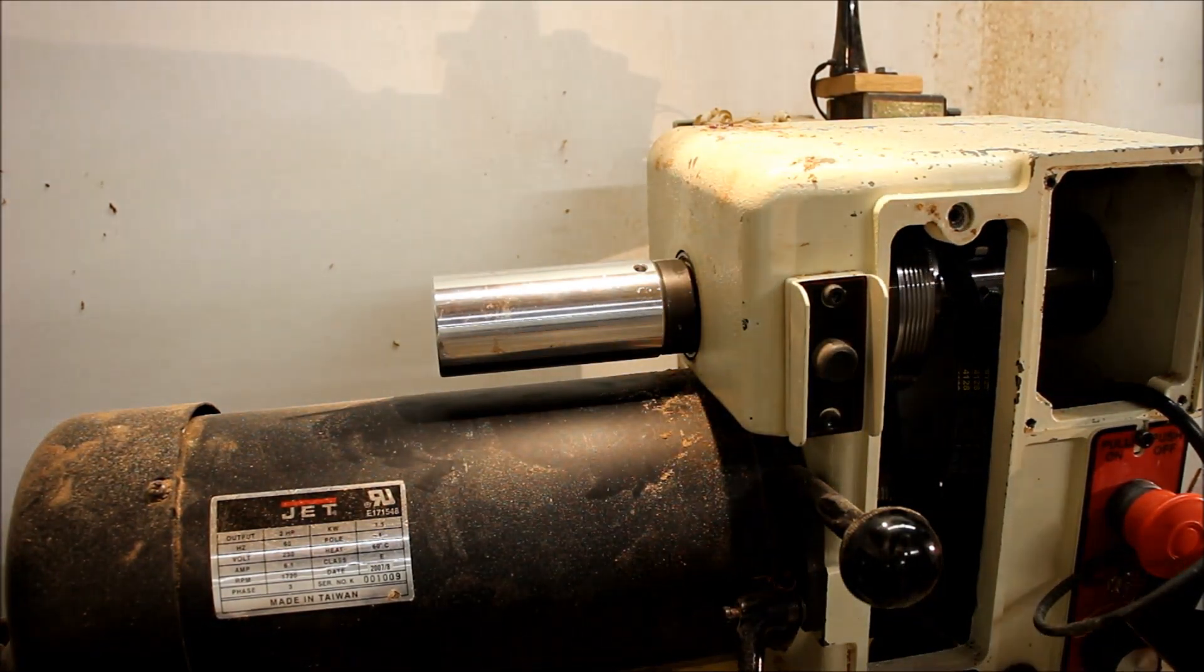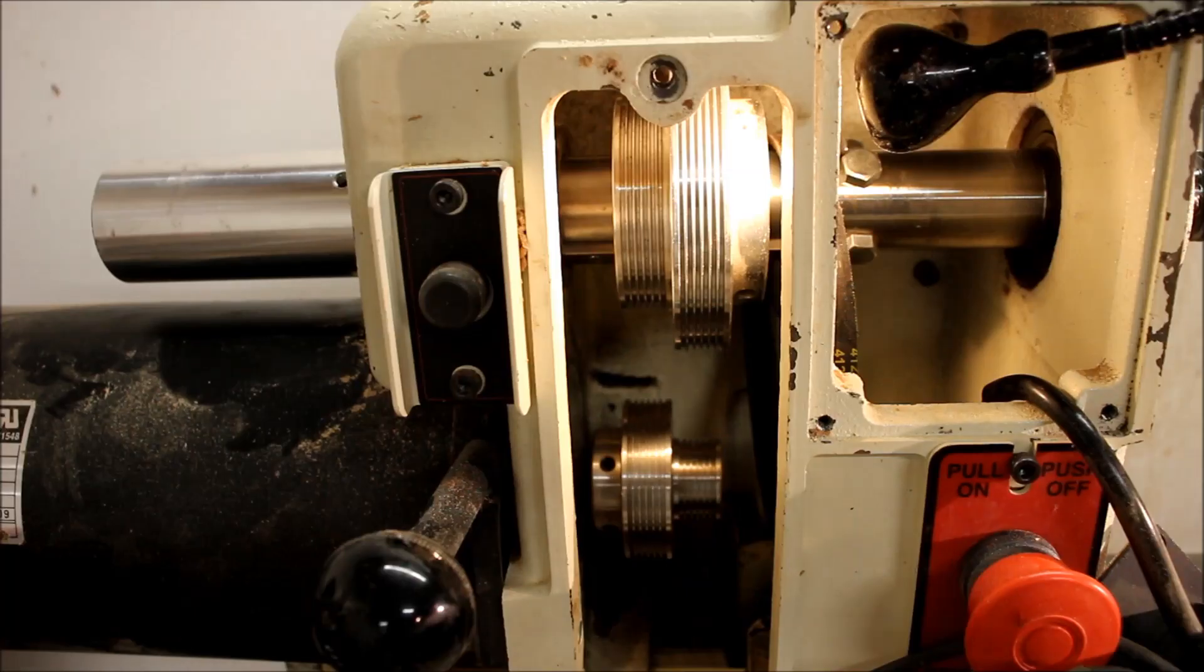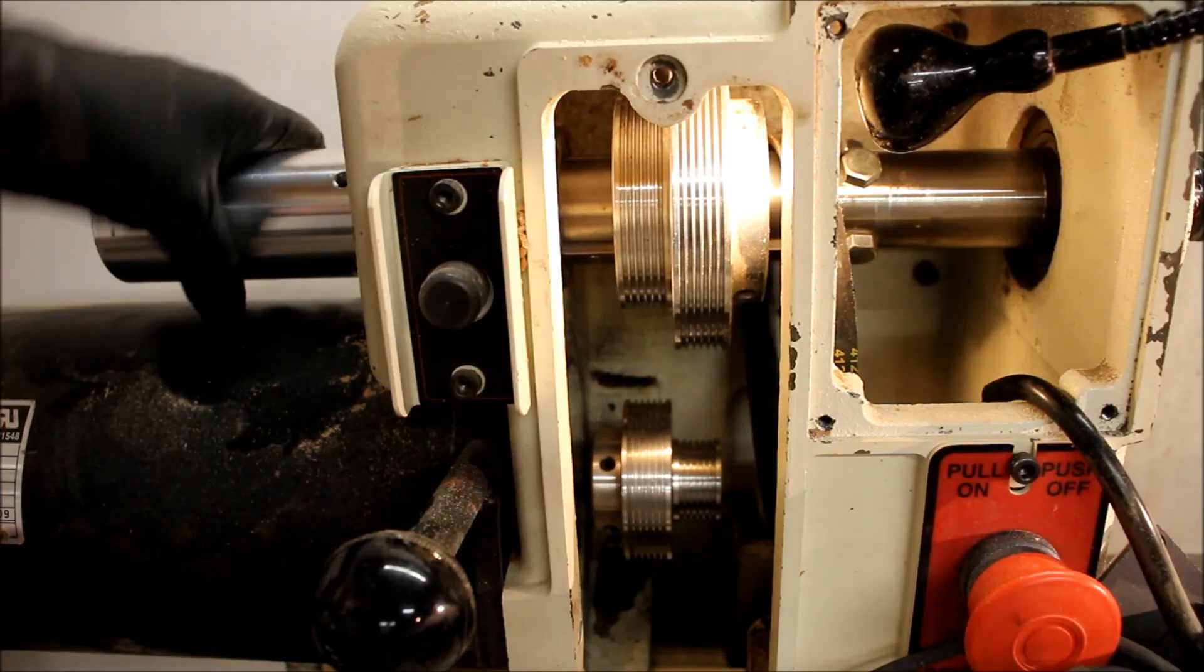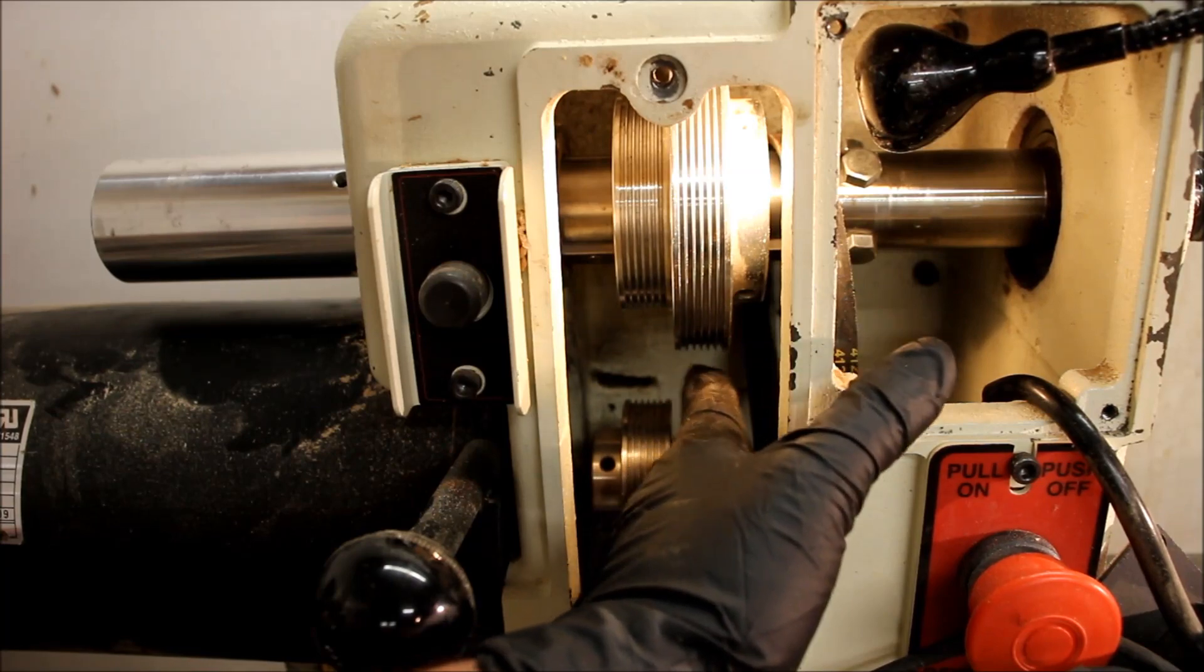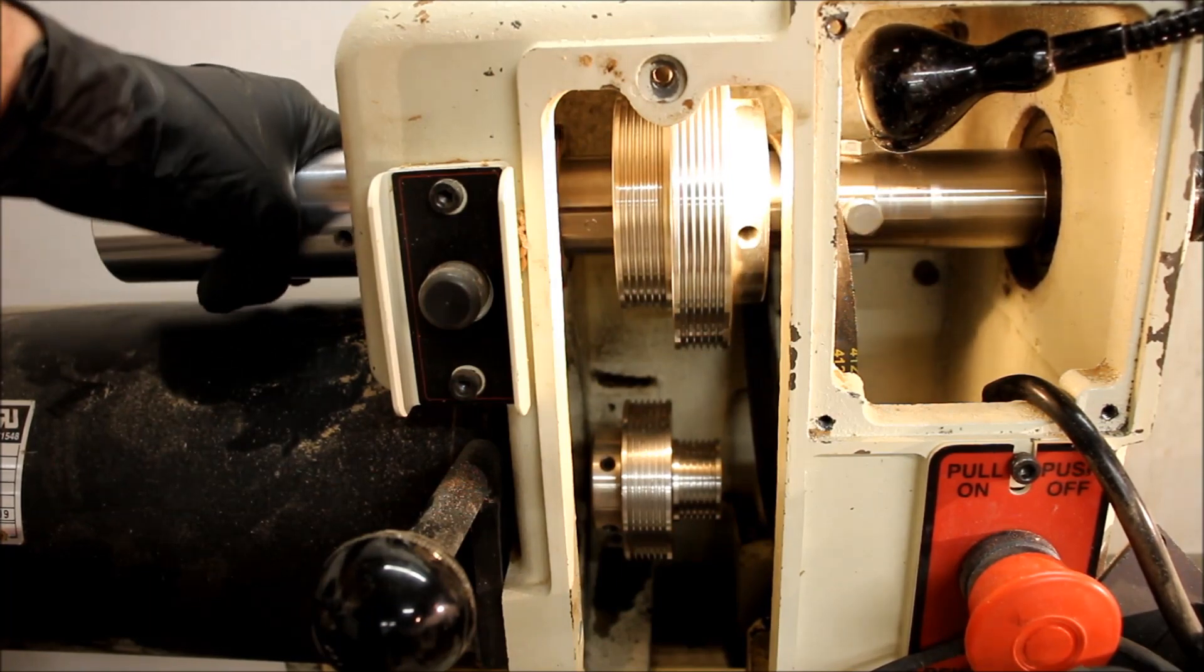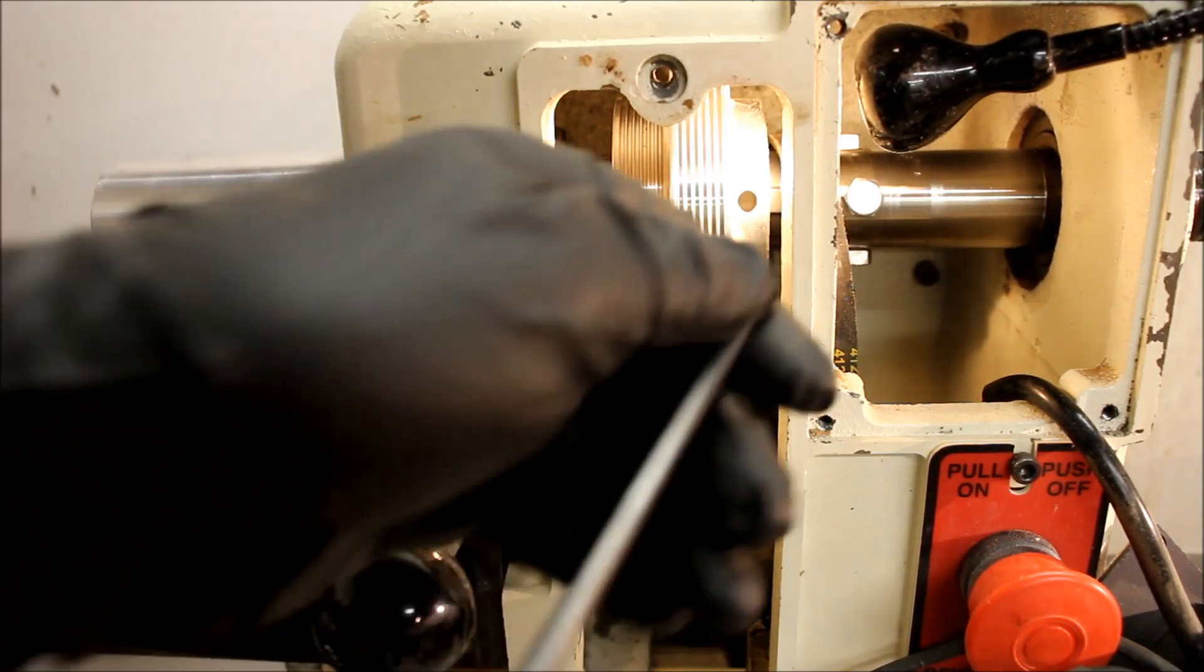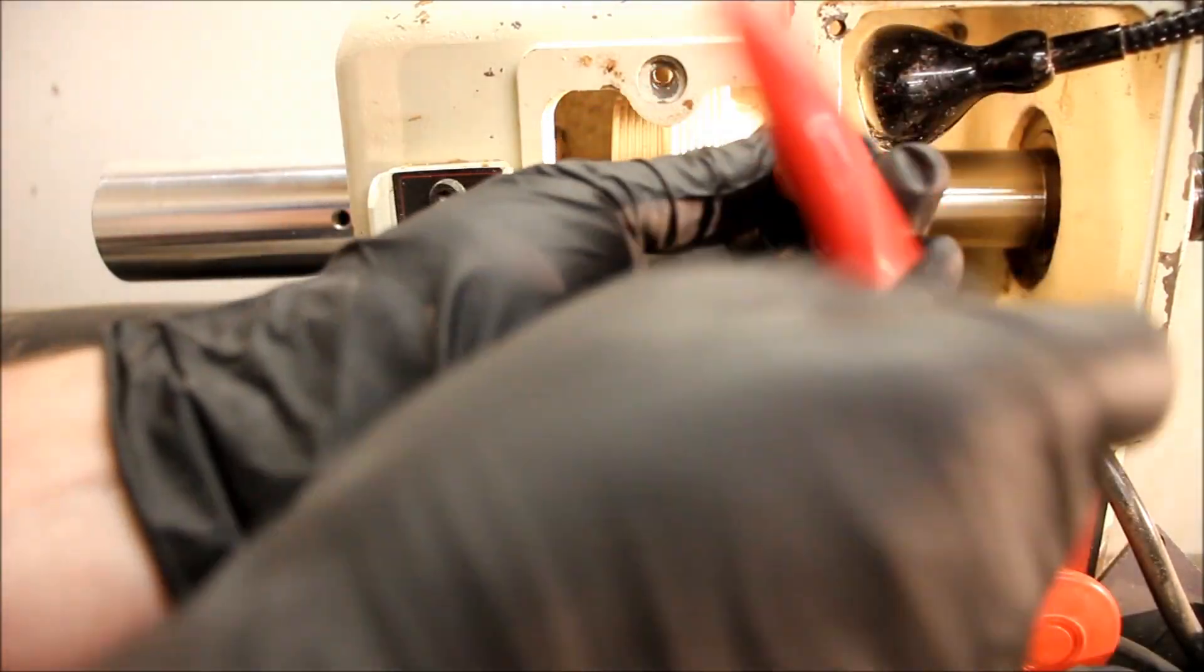And now we'll move back on to the inside and tighten down all the internal components. So we'll go ahead and tighten down the two set screws that go to our pulley. You need to make sure that these are perfectly lined up. If not, your belt will have a tendency to kind of go one way or the other and it could lead to wear on the belt. So we'll go ahead and find the holes for the set screws and reinstall those.